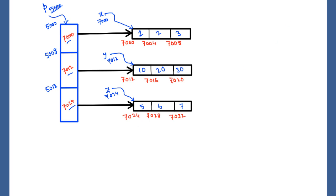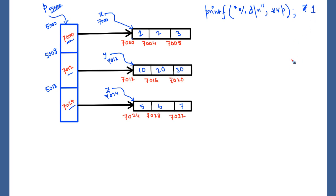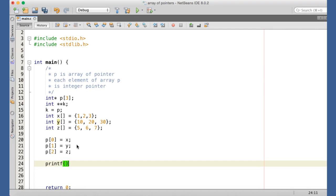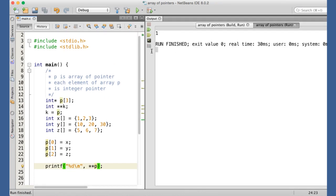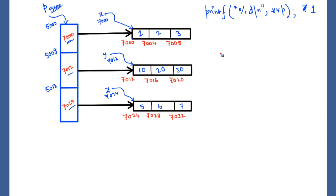If we write a printf statement printing **P, what will the output be? P is 5000, so *P gives the content of 5000, which is 7000. Dereferencing again: *7000 — since 7000 is an integer pointer, it reads four bytes starting from 7000, which is 1. So **P prints 1. Let's verify: running the program, it's indeed 1. Now, P+1 is 5008 because P is pointer to pointer, so P+1 moves to the next element at 5008.